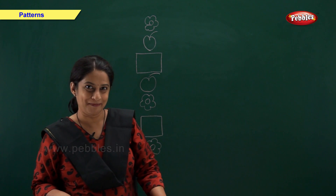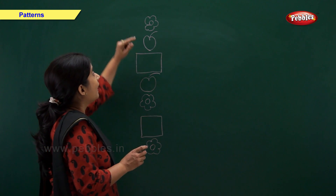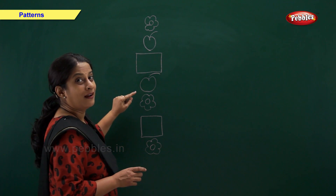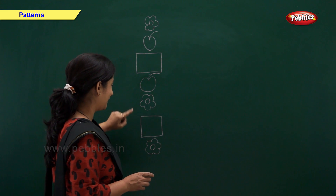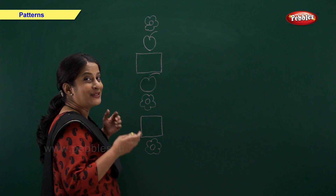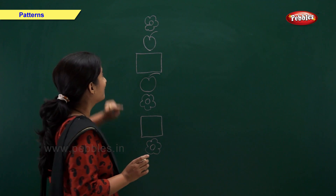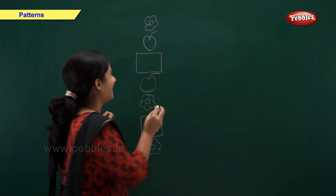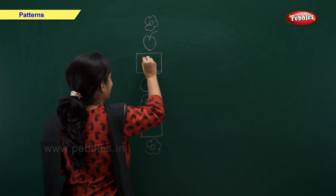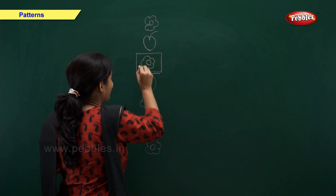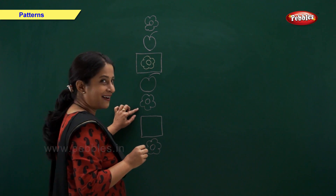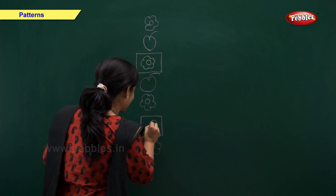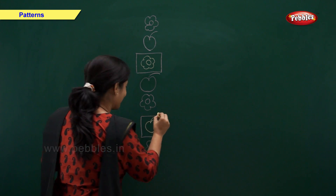Now we have a vertical pattern. We have a flower, apple, missing shape, apple, flower, missing shape and a flower. So let's try and fill these boxes. Flower, apple. Now again a flower. Flower. Apple, flower and now apple. You are right. Pattern is complete.